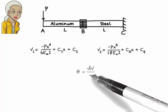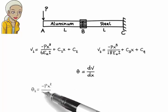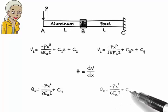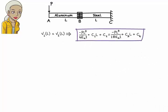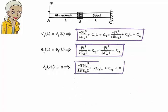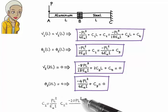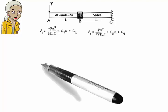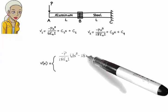The slope equation can be obtained by taking the derivative of the deflection equation with respect to x. So theta1 equals negative Px squared over 2·E sub A·I plus C1, and theta2 equals negative Px squared over 6·E sub A·I plus C3. Here are the four equations. Solving these equations for C1 through C4, we get the integration constants.